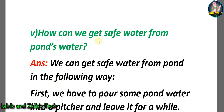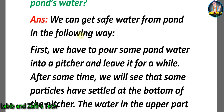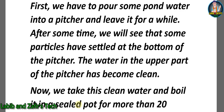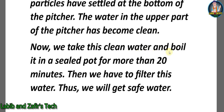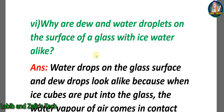Fifth descriptive question: How can you get safe water from pond water? Answer: First, pour some pond water into a pitcher and leave it for a while. After some time, particles settle at the bottom and the water in the upper part becomes clean. Then take this clean water and boil it in a sealed pot for more than 20 minutes. Finally, filter this water — this gives you safe water.